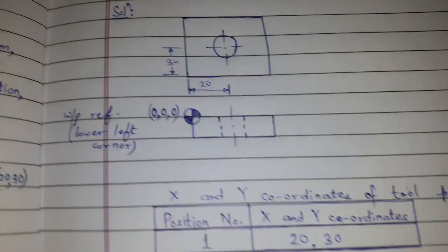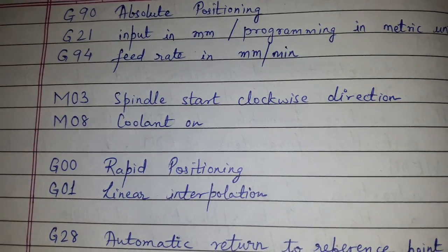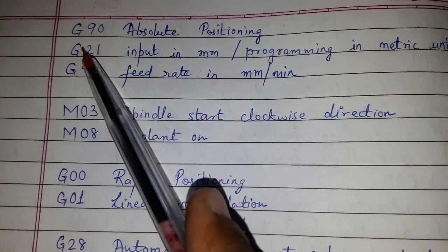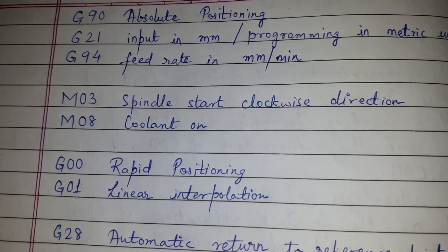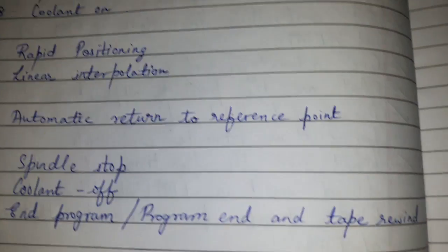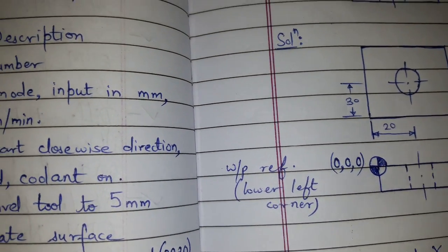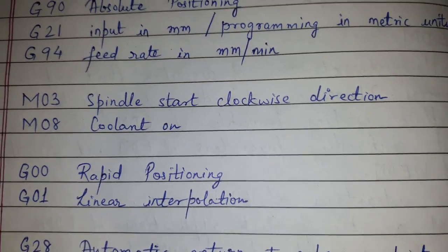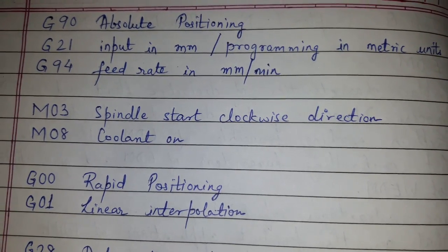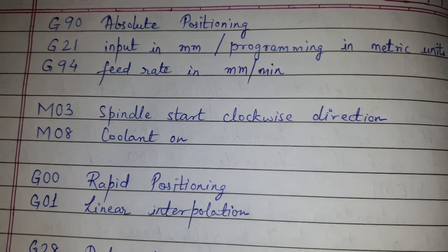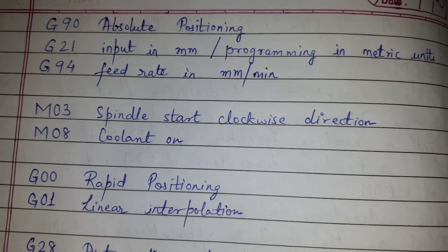Let us see the different codes we will be using for part programming. G90 is absolute positioning, because we will always be taking the reference of the workpiece reference point. The other positioning is incremental, which we are not using here. G21 means input in mm, meaning the programming is done in millimeters.